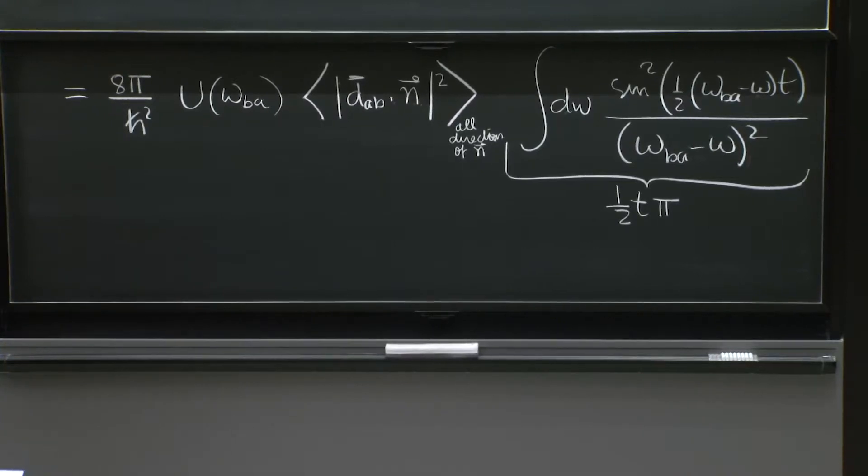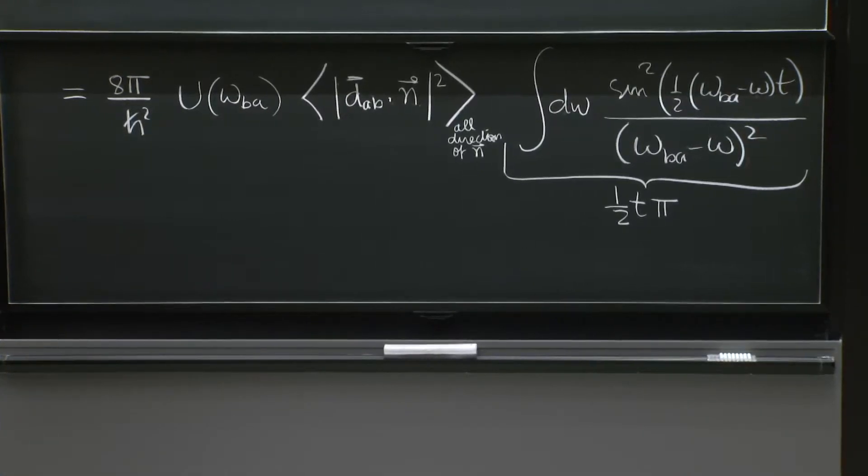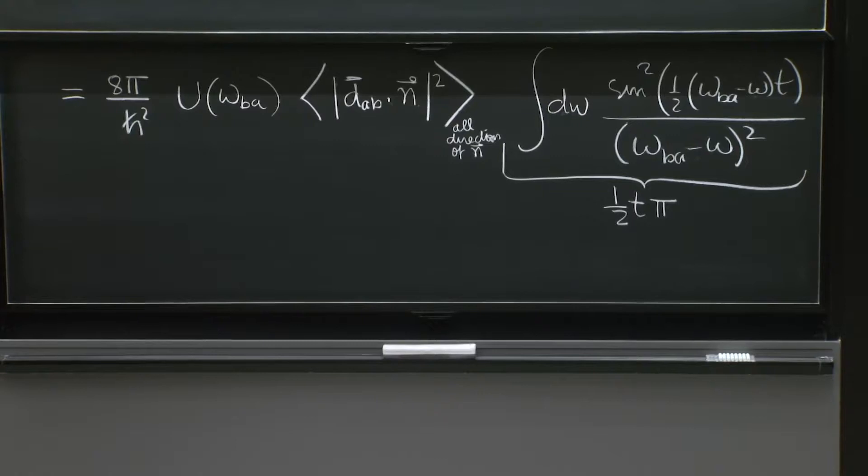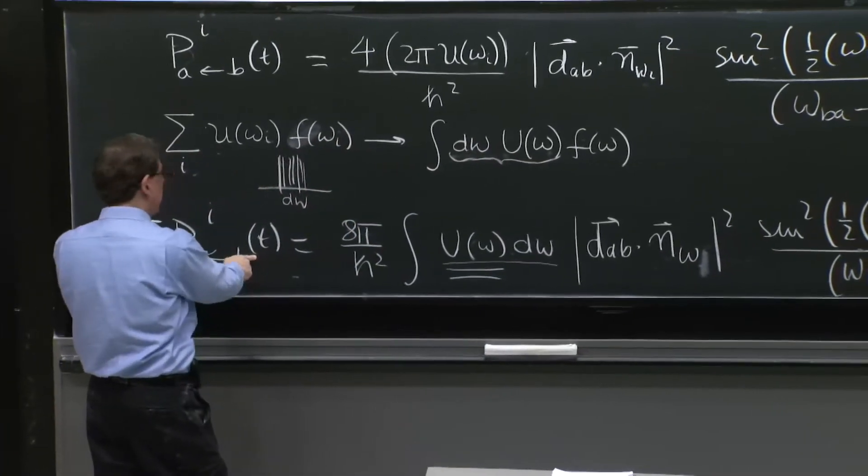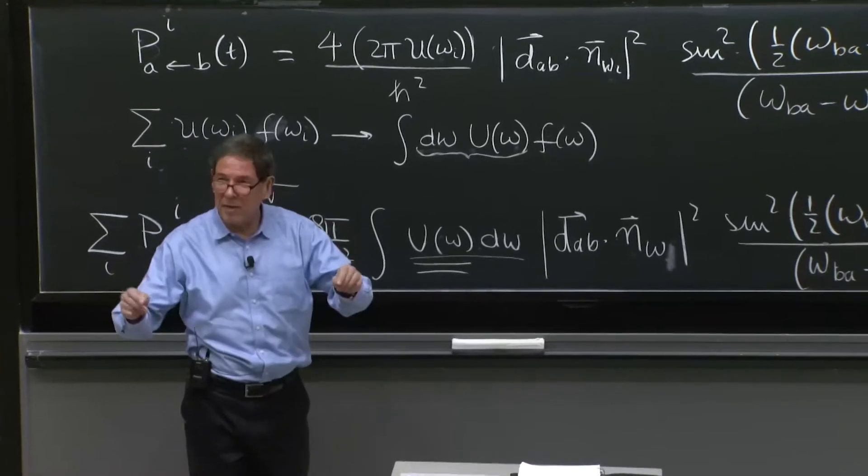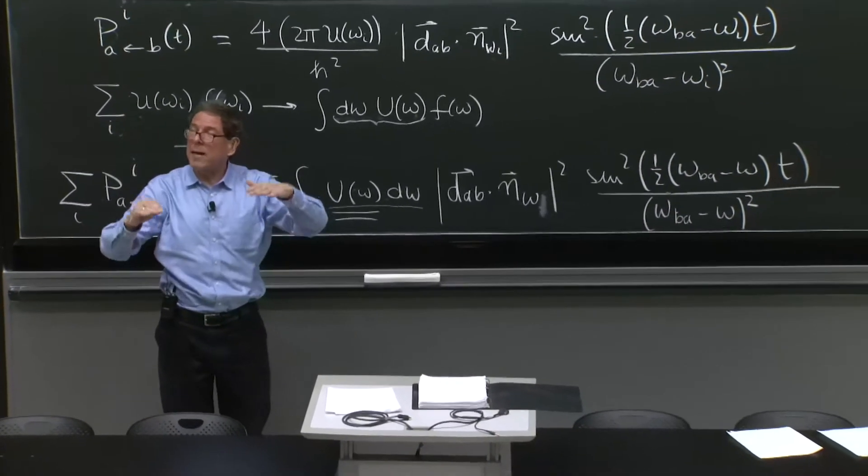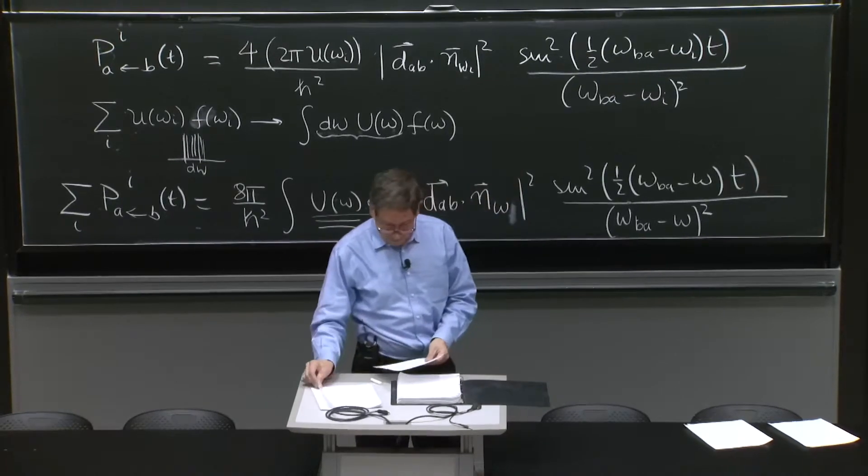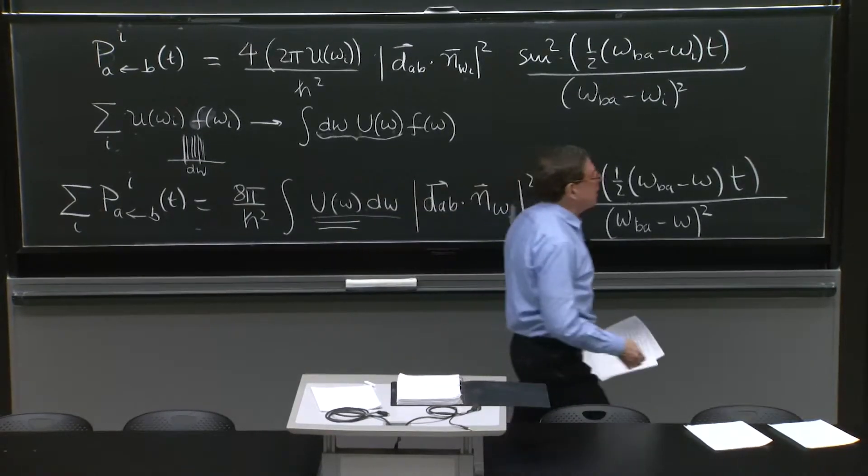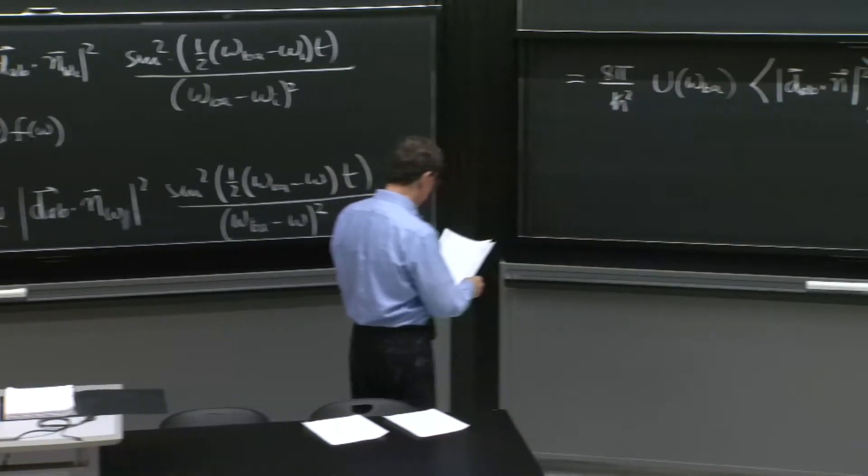And it's pretty important that it's linear in t, because that means that the probability, the probability of transition is linear in time. Therefore, you can divide by time to get that rate of transition. So we're almost there. Let's put this together.